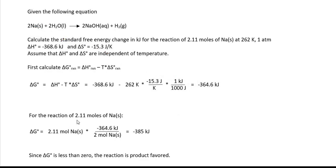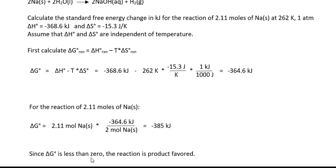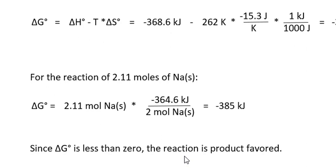Here we're calculating the delta G for 2.11. We would expect negative 385 is slightly more negative than negative 364. Because delta G is negative or less than zero, the reaction is product favored.